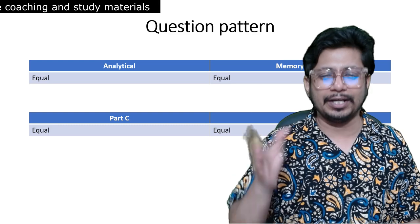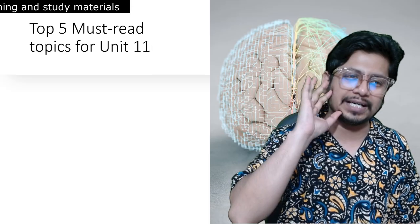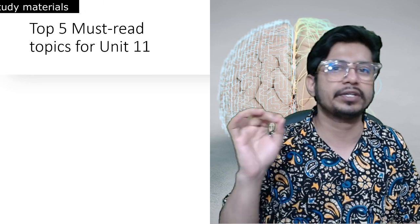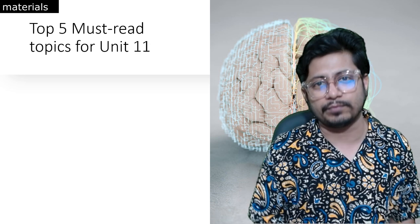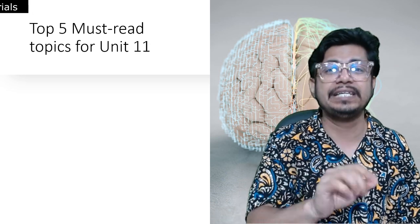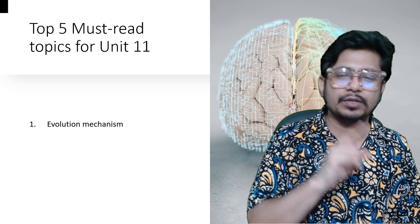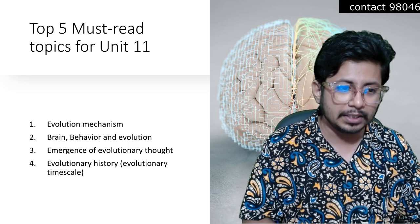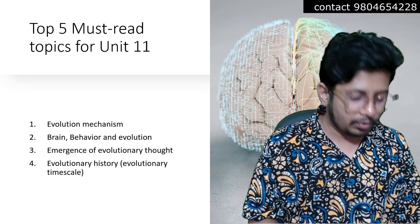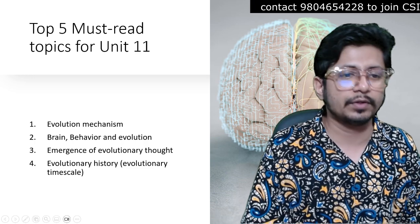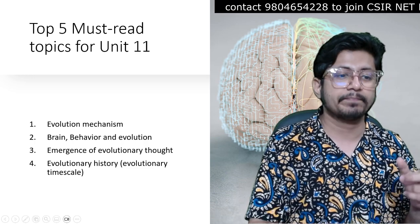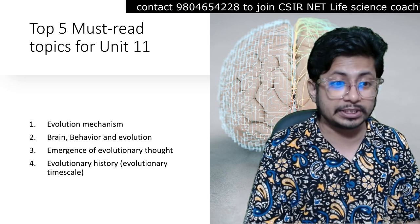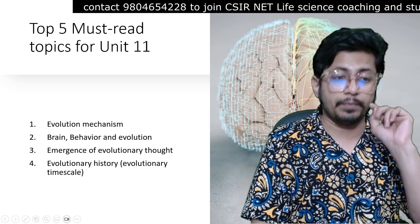The five most important topics from CSIR NET Life Science Unit 11 Evolutionary Biology — these are must-read topics you should not leave out. First: evolution mechanism. Second: population genetics, that is the Hardy-Weinberg equilibrium. Third: brain, behavior, and evolution. Fourth: emergence of evolutionary thought.